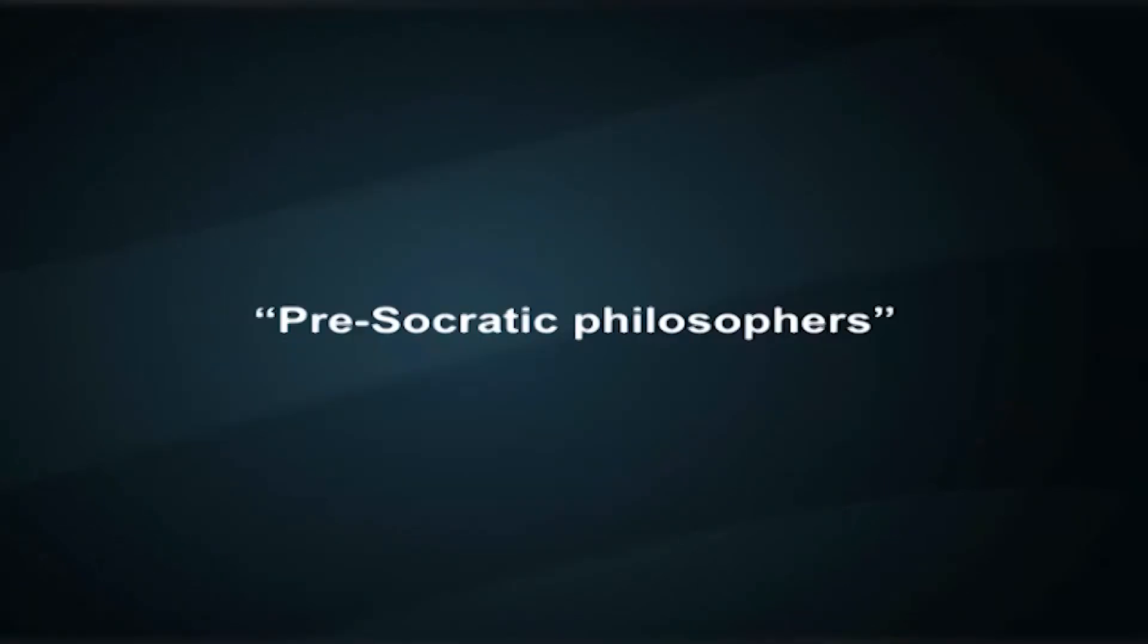The term Pre-Socratic philosophers was made current by Hermann Diels in the 19th century and was meant to mark a contrast between Socrates, who was interested in moral problems, and his predecessors who were supposed to be primarily concerned with cosmological and physical speculation. Pre-Socratic, if taken strictly as a chronological term, is not quite accurate, for the last of them were contemporaneous with Socrates and even Plato.